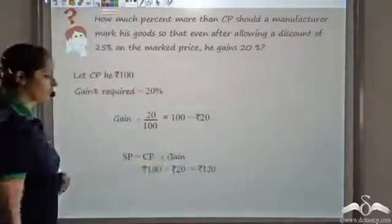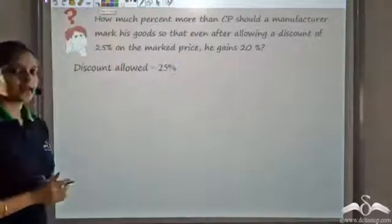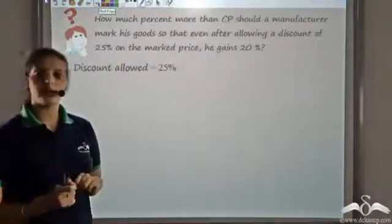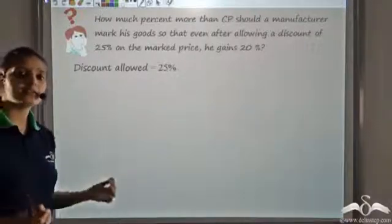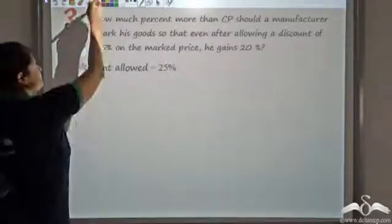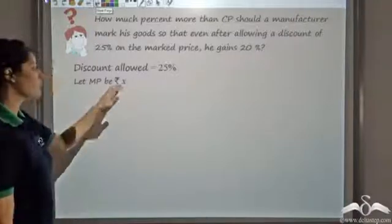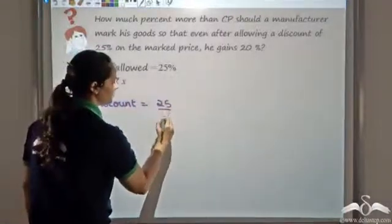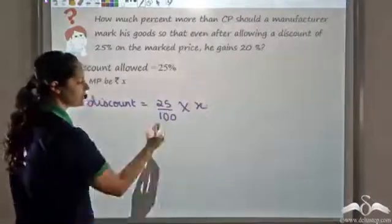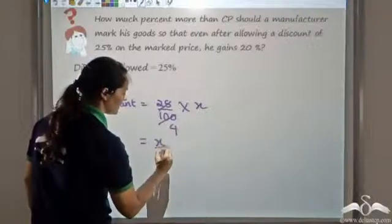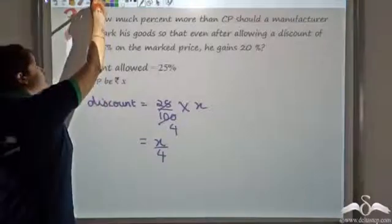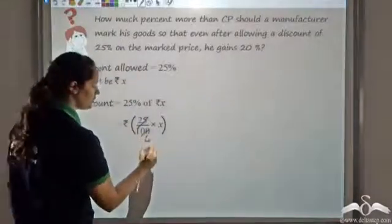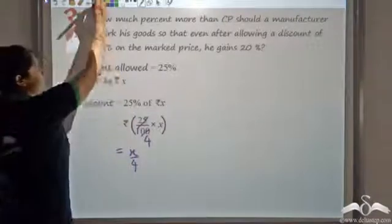Now let's look at the discount. We know the selling price is 120. He is giving a discount of 25%. Discount is always given on the marked price, and we do not know the marked price, so let's assume the marked price is X. If the marked price is X, then the discount is 25% of X, which is 25/100 times X, equal to X by 4.